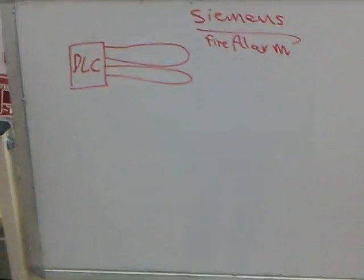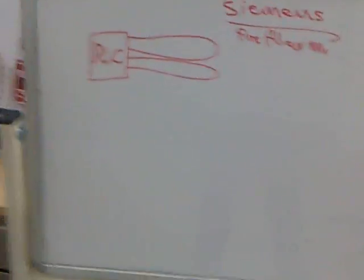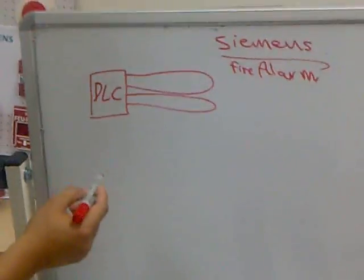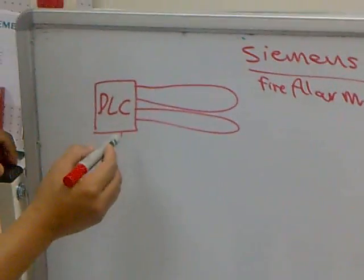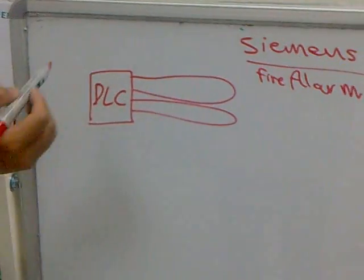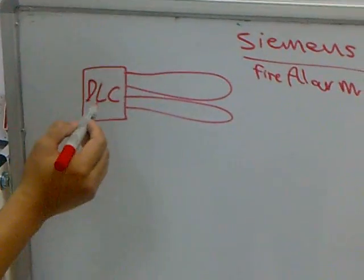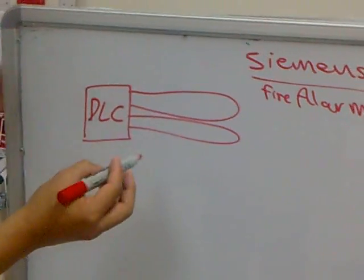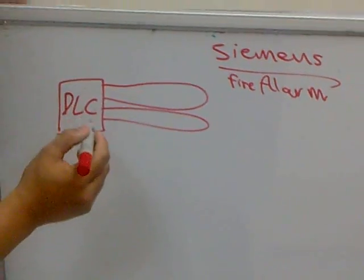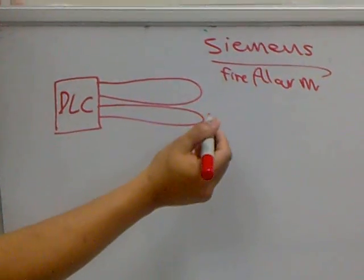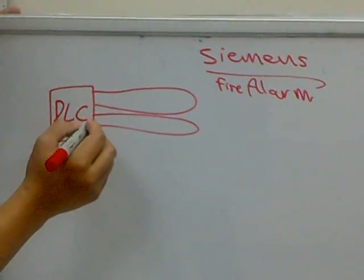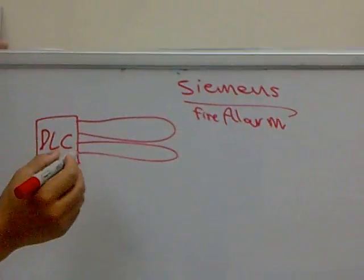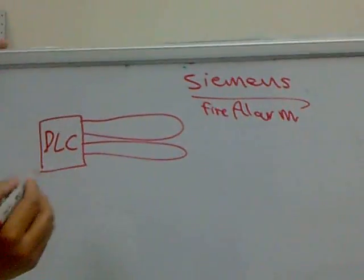We are back. This is the DLC card — the Device Loop Card. Each Device Loop card can handle two loops, and each card can handle 200 devices.